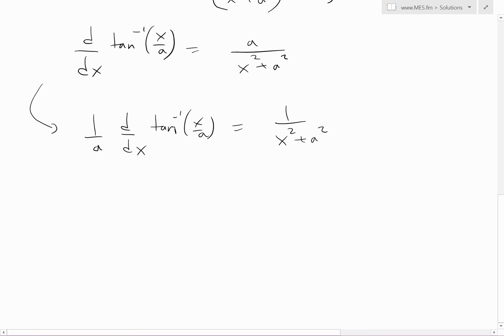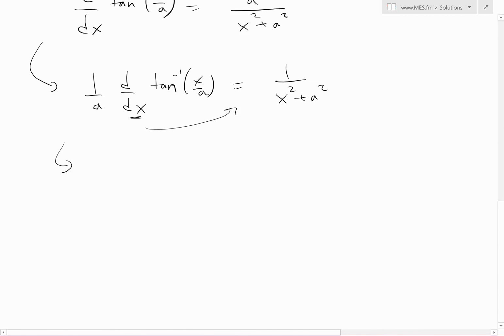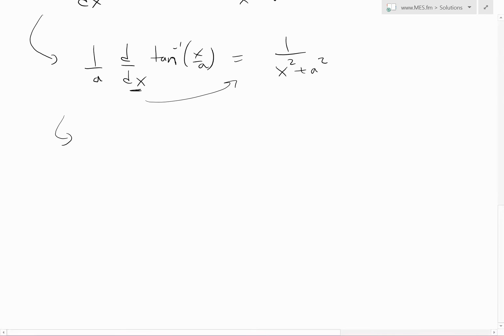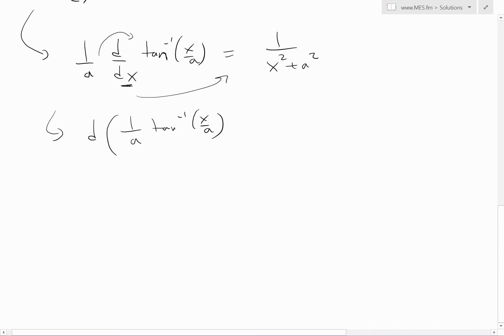Now we could put this constant inside this derivative. This is a differential, we could multiply to get it on this side. We could do that simply based on differentials. You see more on that in my proof of the derivative concept in my links below. Now we could move this inside because that's just a constant. So we have d of 1 over a times tan inverse x over a.